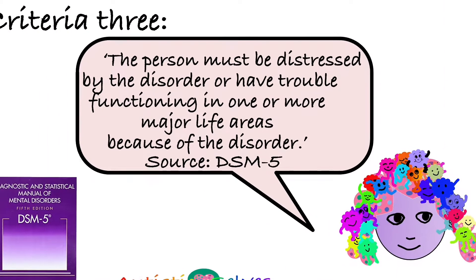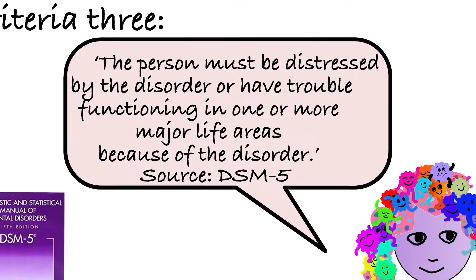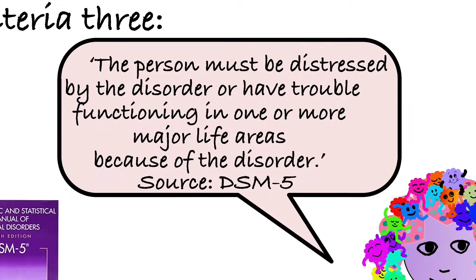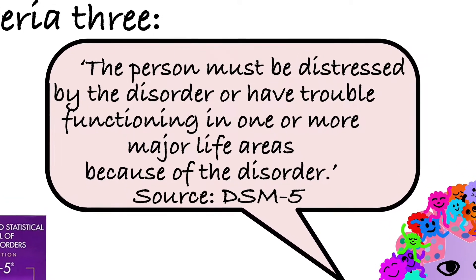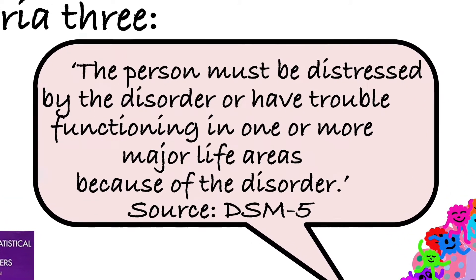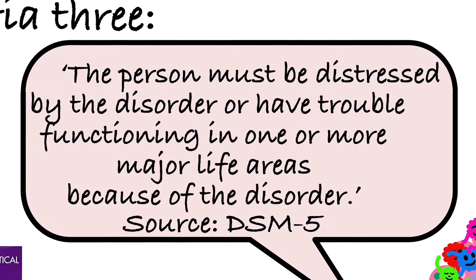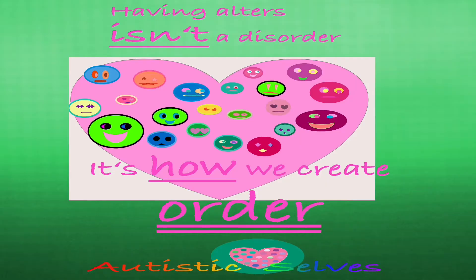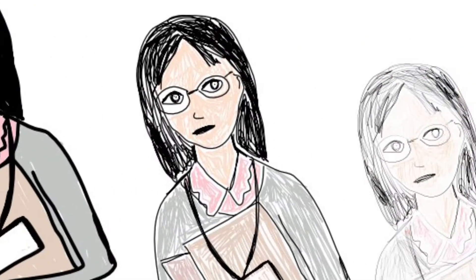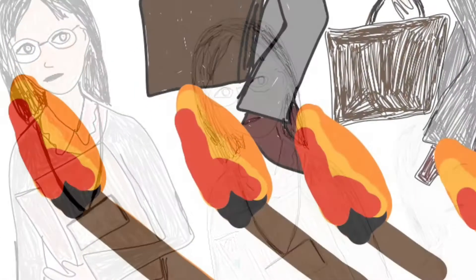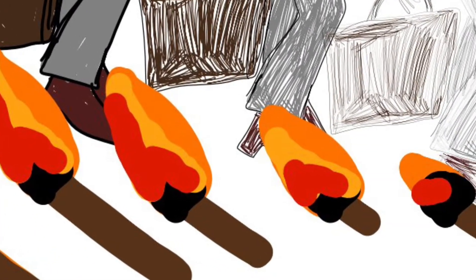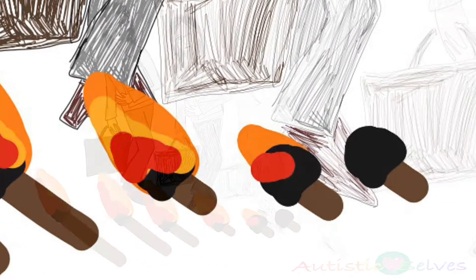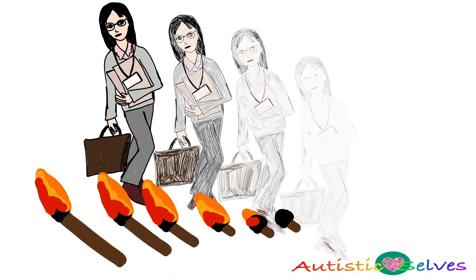The third criteria listed in the DSM-5 is that the person must be distressed by the disorder or have trouble functioning in one or more major life areas because of the disorder. Although we celebrate having alters, embracing them and seeing them as enhancing not spoiling our lives, it is also true that having DID can be distressing and difficult. We often get confused and are not currently employed because of our difficulties.